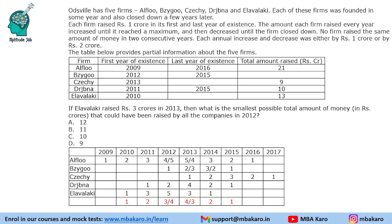If E raised 3 crores in 2013, either scenario is possible. For the smallest possible total amount raised by all companies in 2012: we take relevant cases. Since E raised 3 crores in 2013, it could raise up to 5 crores in 2012 under one scenario — so we consider the second scenario where it raises 3 crores in 2012. The minimum total for 2012 is 4 plus 1, plus 5 plus 2, plus 4 — that is 11 crores.